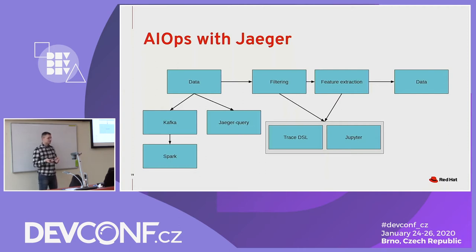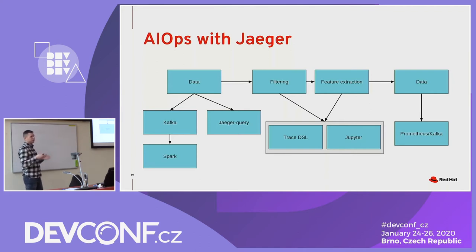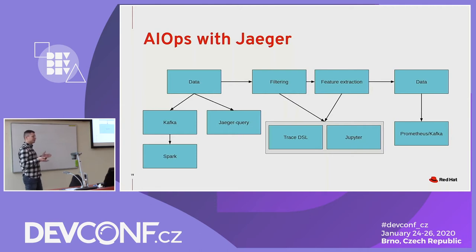Or you want to answer questions like: are these spans even connected somehow? For storing results, this is an open question — we don't know how to approach it yet. Different models or types of analysis may produce different results requiring different schemas, but maybe there is a generic schema usable for most models. Some feature extraction will result in metrics that you can directly expose as a Prometheus endpoint and collect from Prometheus.